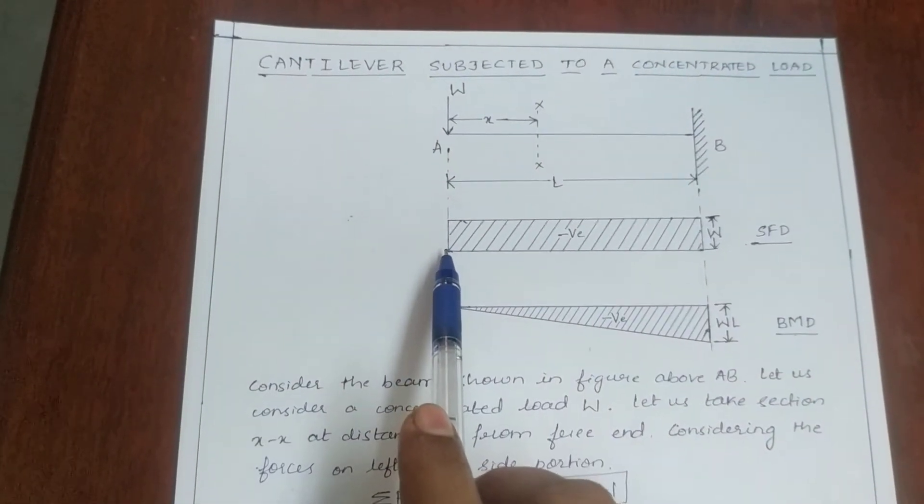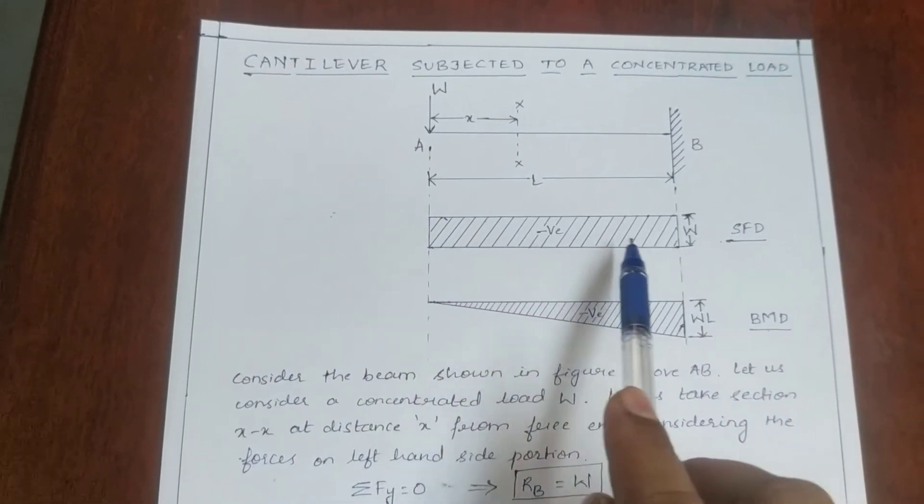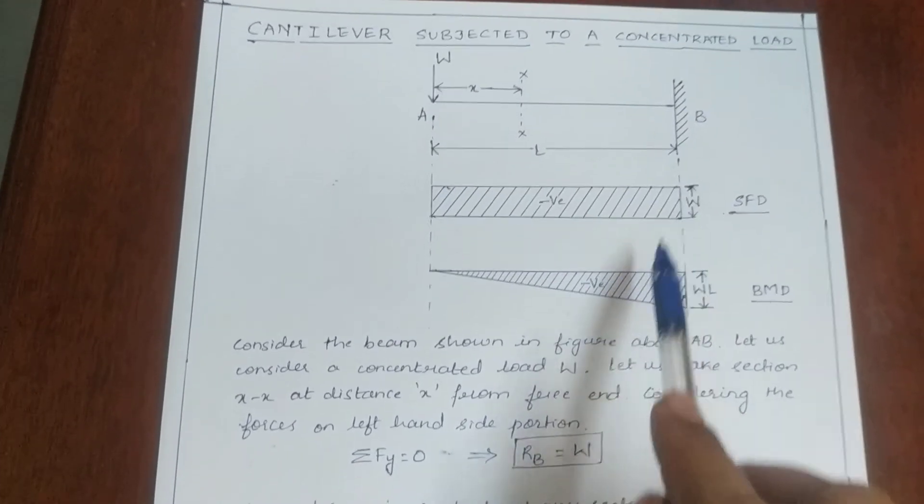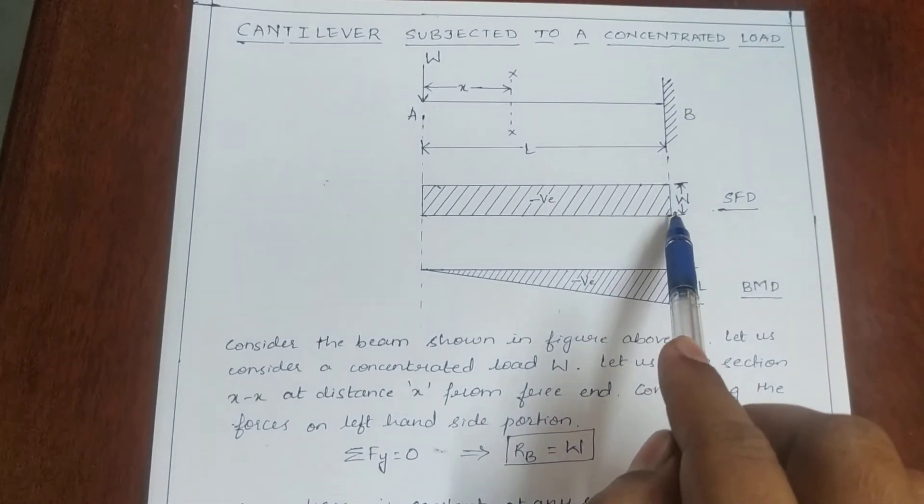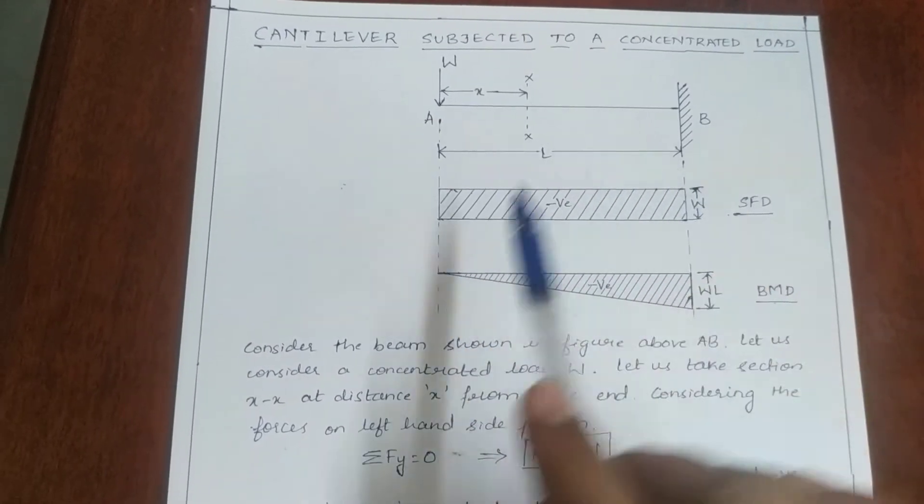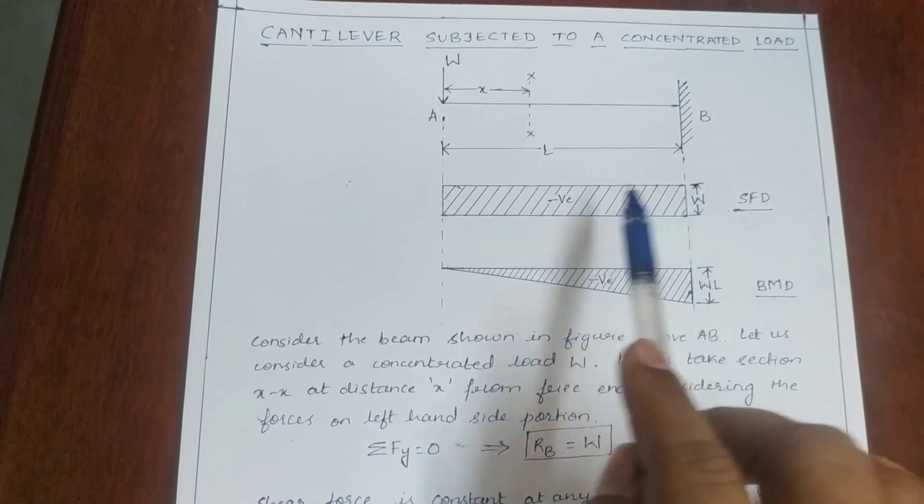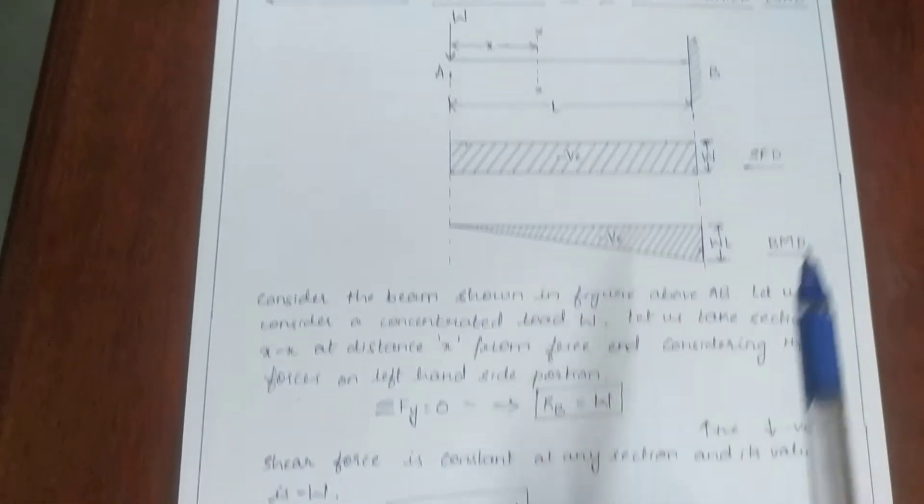First, it is minus W until this point here at B. Then RB is plus W, so we will reach the point here. So we get the shear force diagram throughout; it is constant negative, that is minus W.